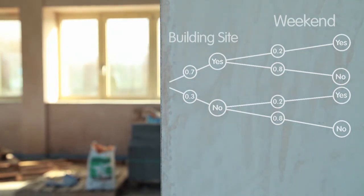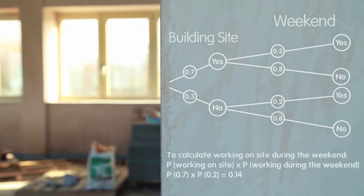We now need to multiply the probabilities of the independent events. The probability of Ashok working on the building site multiplied by the probability of Ashok working on the weekend. This is 0.7 multiplied by 0.2.